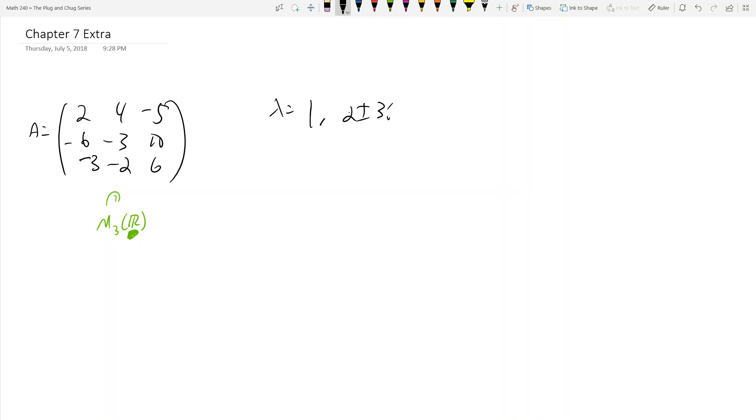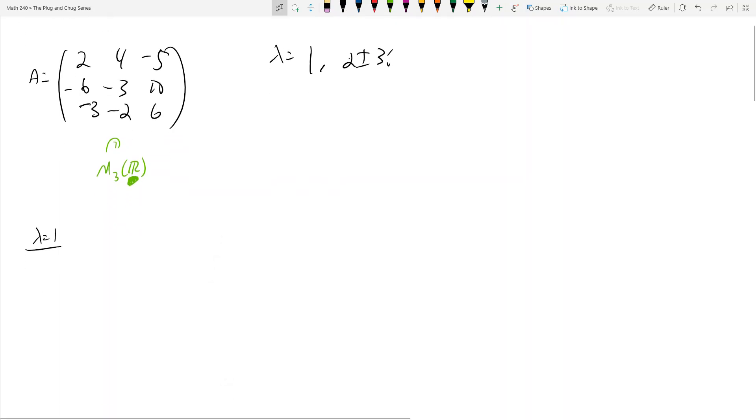You go through your steps for lambda equals 1 and you should get eigenvector V1 equals (1, 1, 1). That's not the point of this video - you know how to find the eigenvector for a real-valued eigenvalue.